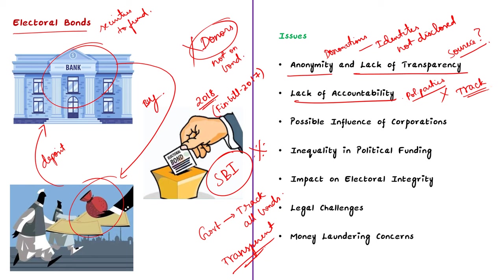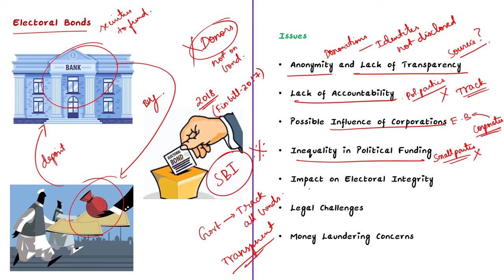The third important issue is the possible influence of corporations. Critics argue that the electoral bond scheme may enable corporations and wealthy individuals to have undue influence over political parties and government decisions, as they can make significant donations without any public scrutiny. The fourth important issue is inequality in political funding. Small and regional parties often have limited access to electoral bonds, leading to unequal distribution of funds and creating disparities between large national parties and smaller parties. The fifth important issue is the impact on electoral integrity — the lack of transparency regarding electoral bonds can undermine the integrity of the electoral process, and it can be challenging for citizens to know who is funding the parties, which may erode public trust in the political system.